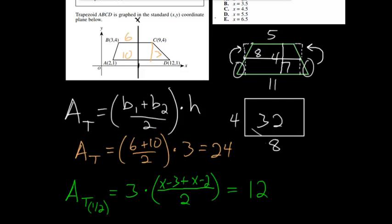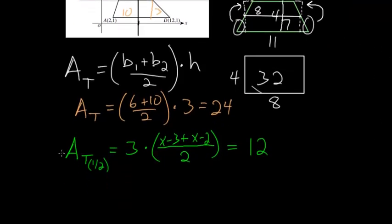So now we have an equation where we can solve for x. So let's do that. We have 3 times x minus 3 plus x minus 2. So we have two x's, and then minus 5 if we combine them, all divided by 2, equals 12.